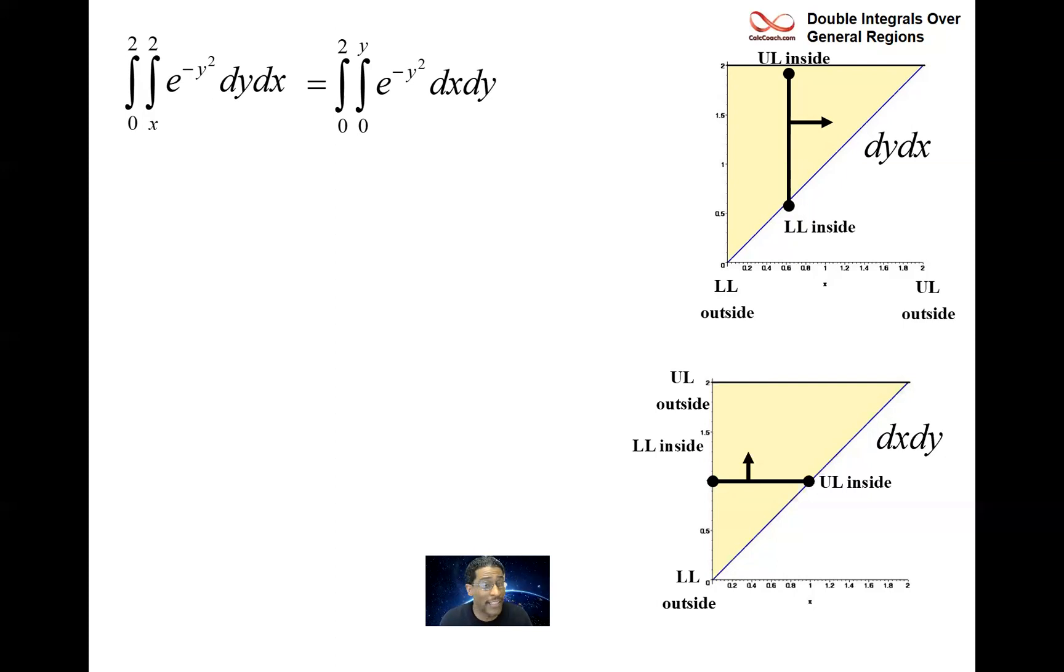Now the integrand who is in terms of y gets treated like a constant. There are no x's in there. It's the same as integrating your favorite number whatever that might be. Integrate 4. The antiderivative with respect to x, 4x. The antiderivative of e to the minus y squared with respect to x, e to the minus y squared times x.